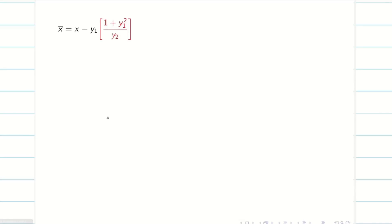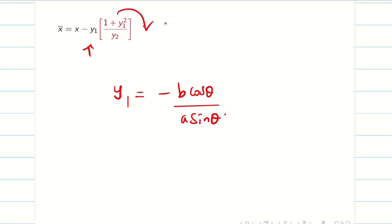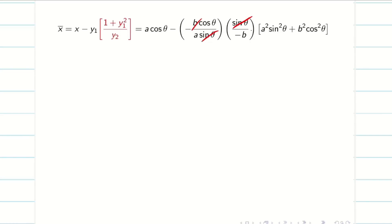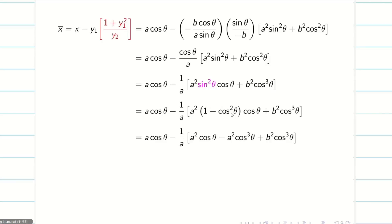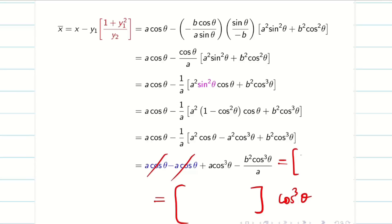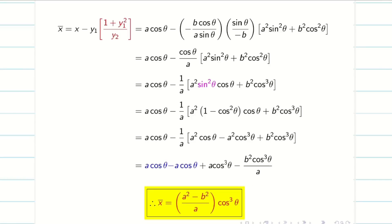Next we find x̄ = x − y₁ × (1 + y₁²)/y₂. With x = a cosθ and y₁ = −b cosθ/(a sinθ), substituting and cancelling sinθ, b, and sign terms, we get −cosθ/a. Multiplying cosθ inside shows cosθ terms everywhere except sin²θ, so we convert sin²θ = 1 − cos²θ. Expanding, the a cosθ terms cancel, and taking cos³θ out gives x̄ = (a² − b²) cos³θ / a. Step 3 is complete.